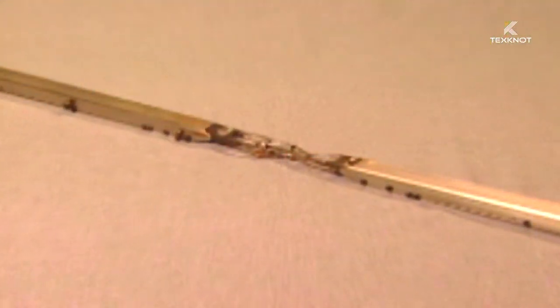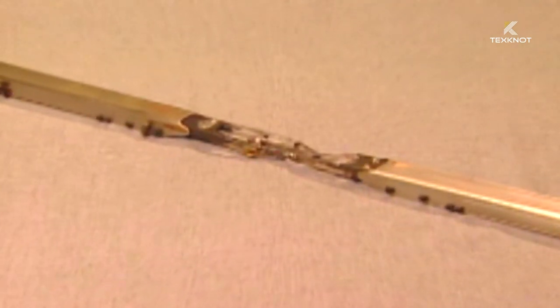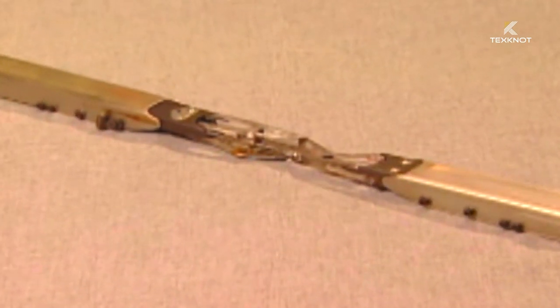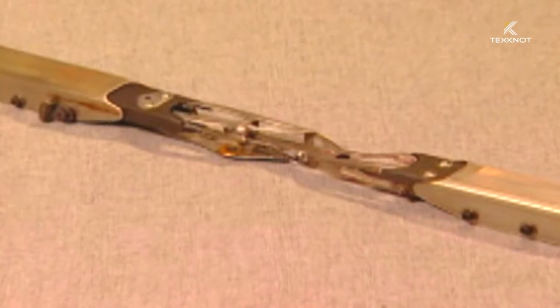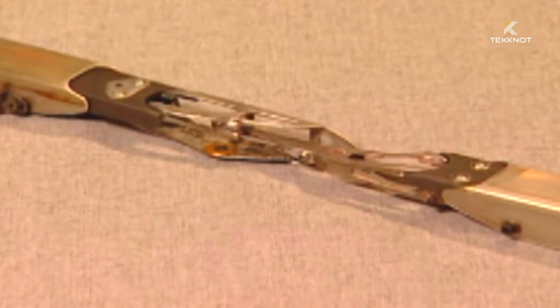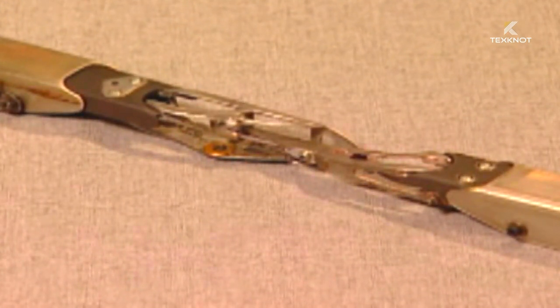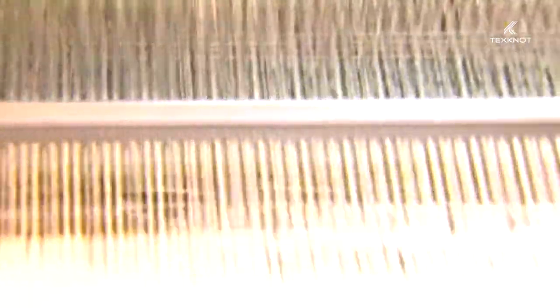Rapier filling insertion is one of the most versatile of insertion types. This is due to the rapier head gripping the yarn and carrying it across the width of the shed. Therefore, any yarn, from extremely fine to very coarse, can be woven. Also, very different yarns can be woven from pick to pick without readjusting the rapier.